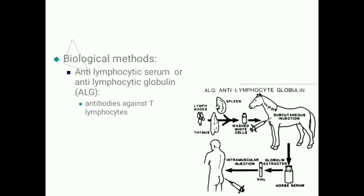For biological methods of immunosuppression, anti-lymphocytic serum or anti-lymphocytic globulin is injected. Antibodies are produced against T lymphocytes by taking lymphocytes from an individual and injecting them into another species such as a horse. The horse produces antibodies against these lymphocytes, and the collected serum containing these antibodies is injected back into the individual, thereby suppressing T lymphocyte activity.